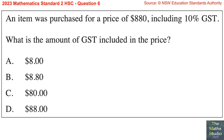Question 6. An item was purchased for a price of $880 including 10% GST. What is the amount of GST included in the price?